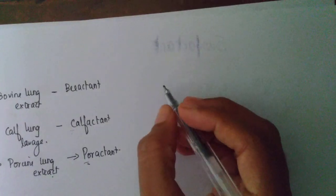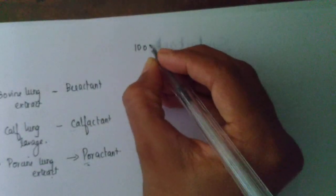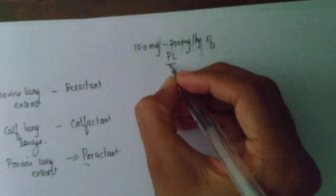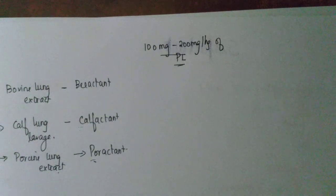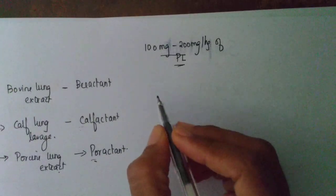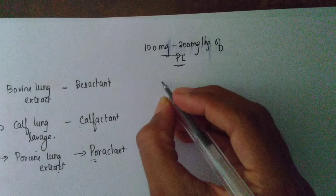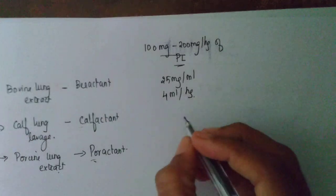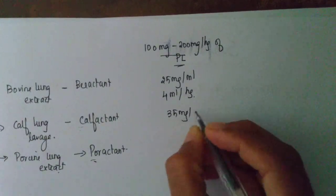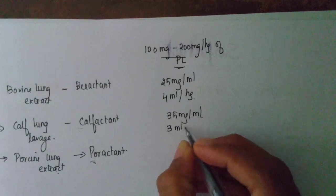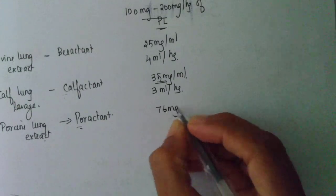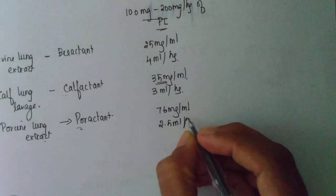First few letters are being used and actant component, these will be the active components. So how much to give? The dose varies from 100 mg to 200 mg per kg of the phospholipid component. Phospholipid is the main content, that is what we saw in our constituents of surfactant. So for survanta or beractant this has approximately 25 mg per ml of phospholipid so the dose will be 4 ml per kg. Infrasurf has 35 mg per ml of the phospholipid and the dose will be 3 ml per kg because the concentration is more. Curosurf has 76 mg per ml of phospholipid and the dose will be very much less, 2.5 ml per kg.